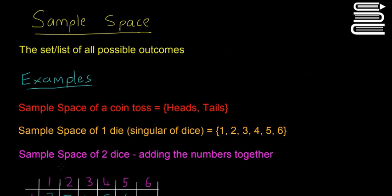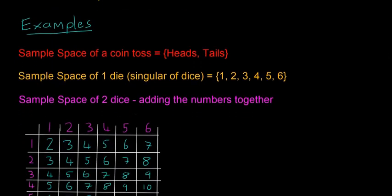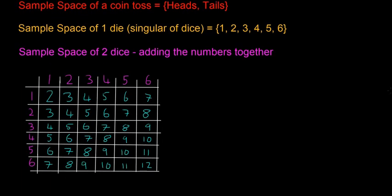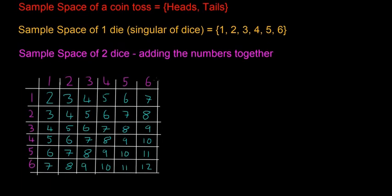And then this is a really useful example: the sample space of rolling two dice and then adding the numbers together. Again, it's a list of all the possible outcomes you can get. So you have 1 through 6 on one die and 1 through 6 on the second die, and then you add the numbers together. So there are 36 different possibilities that can happen when you roll these two dice. This can be a really useful tool in solving probability questions and also for things like Monopoly.